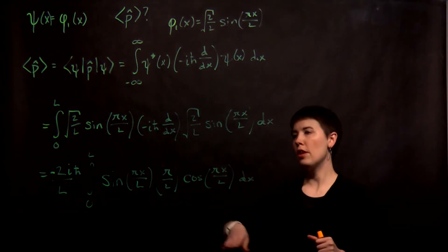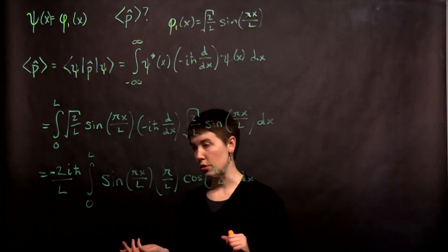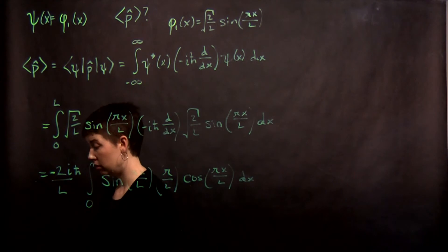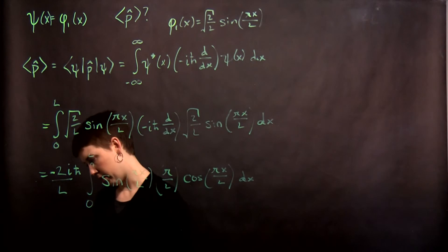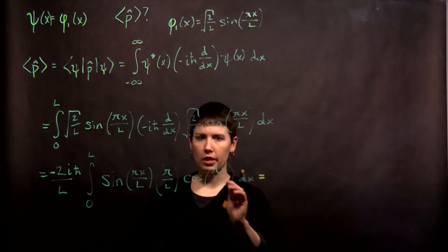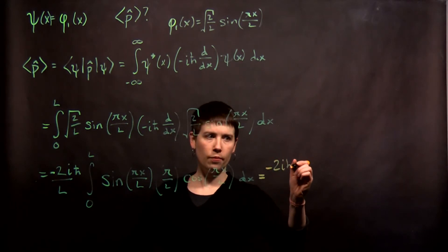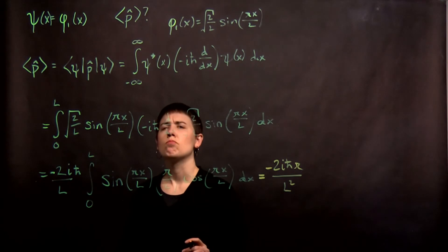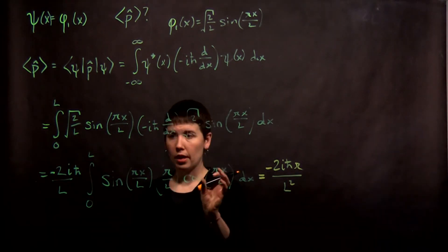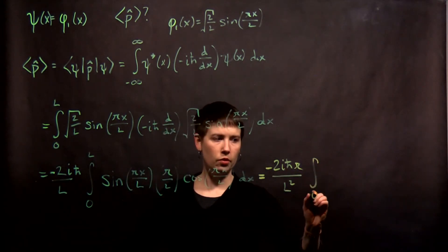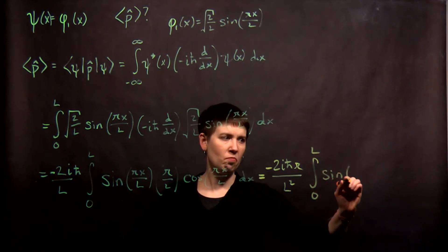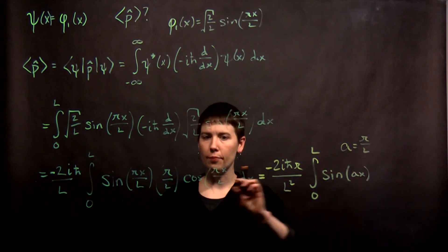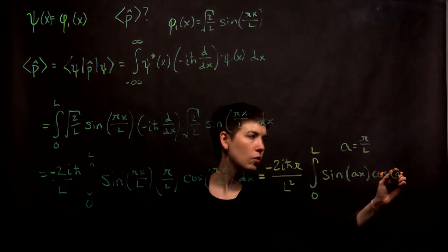So now we have another coefficient that I can pull out front. But then we're left with this thing to integrate. One option is you can try to use a trig identity to try to simplify this first. I'm going to look in the table of integrals in the book and see if there's one that's actually appropriate. I'm going to bring this term out front. So I have negative 2i h-bar pi over L squared. Then my integral is 0 to L. And I'm going to simplify this to just be sine, let's call it A of Ax, where A here is equal to pi over L. So sine of Ax, cosine of Ax, dx.